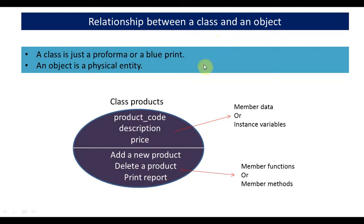Like in this example, suppose I have a class products. In the products class, as the data, we will be having product_code, description, and price. This constitutes your member data. And remember, member data is also called instance variables.